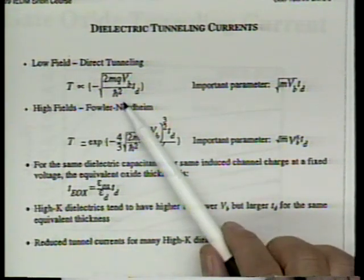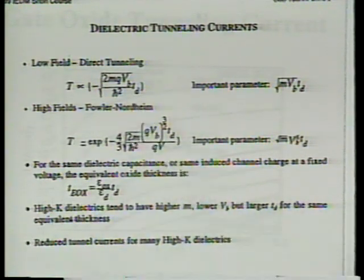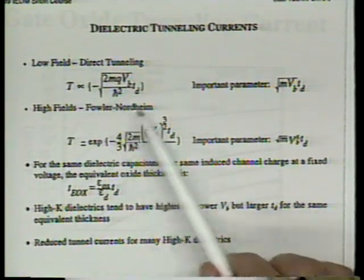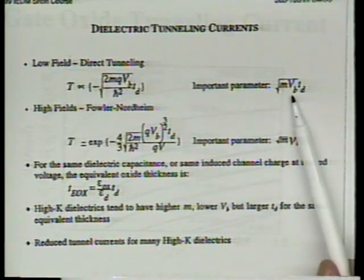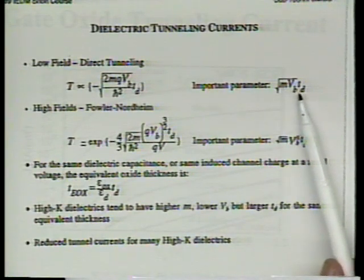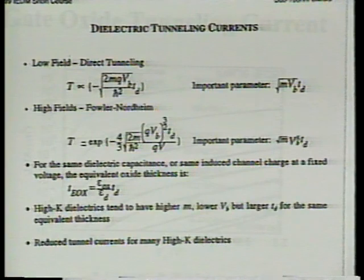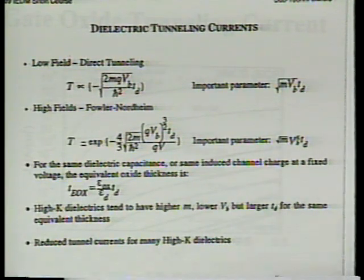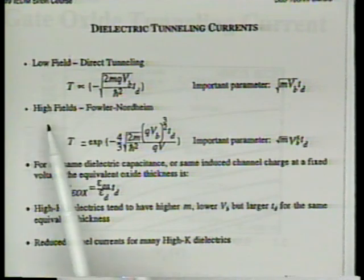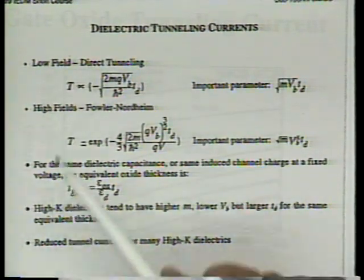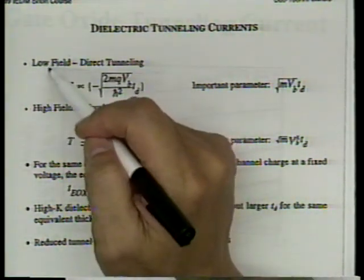With this model, the effective mass and barrier height can be extracted by curve fitting to SiO2 data. A student then took the same equations, changed the barrier height and effective mass to values appropriate for nitride, and found very good agreement with nitride data. This allows extrapolation: if we can tolerate 100 A/cm², nitride could use about 8 Angstroms where oxide would need about 12 Angstroms.